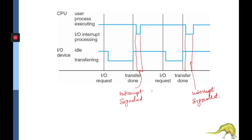Here is a timing diagram of how interrupts happen. When a CPU is running a user process and the user process requests an I/O device to fulfill an I/O request, initially the I/O device is idle. When the I/O request is received, the device starts performing the operation. When the transfer is done, it signals an interrupt to the CPU. The CPU then transfers control to the interrupt handler, performs the required operation, and returns to the user process once the interrupt is handled.